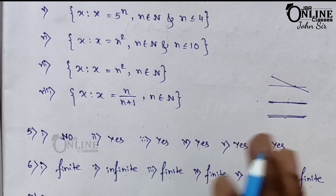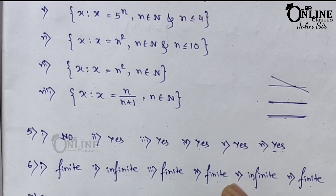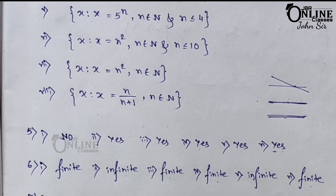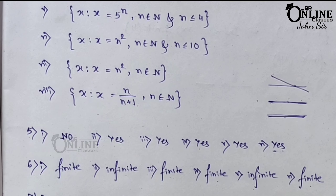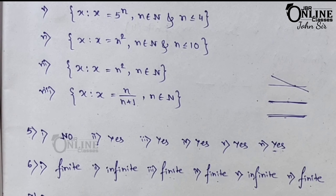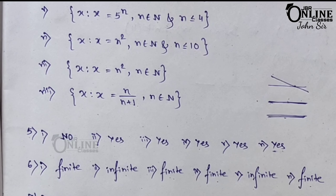Note that two 1s and two 2s appear, but in a set, repetition is not allowed. When counting elements, a repeated number is not counted twice. So the number of elements — the cardinal number — is only 3: one, two, and three.